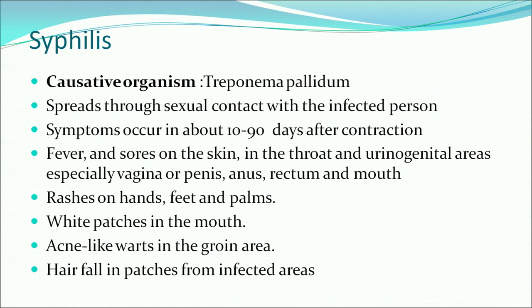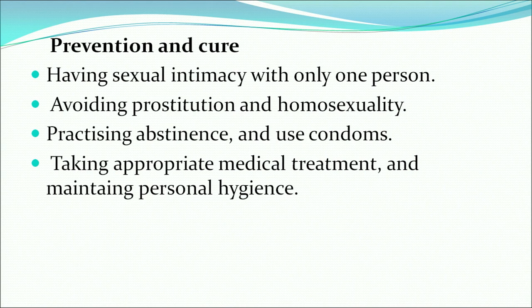The next STD is syphilis. Its causative organism is Treponema pallidum. It spreads through sexual contact with the infected person. Symptoms occur from about 90 days after contraction and include fever, sores in the skin, throat and urogenital areas — especially vagina, penis, anus, rectum and mouth — rashes on hands, feet and palms, and white patches in the mouth. Prevention includes having sexual intimacy with only one person, avoiding prostitution and homosexuality, and maintaining personal hygiene.